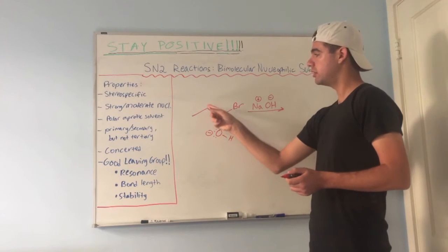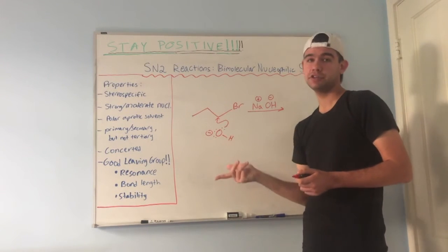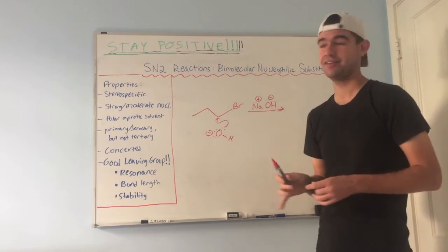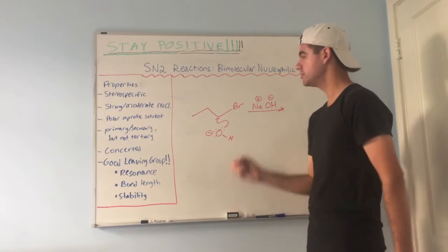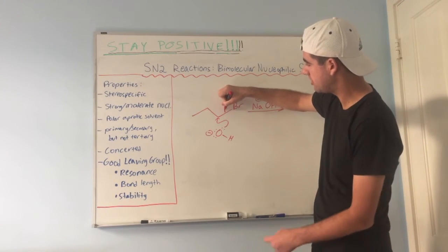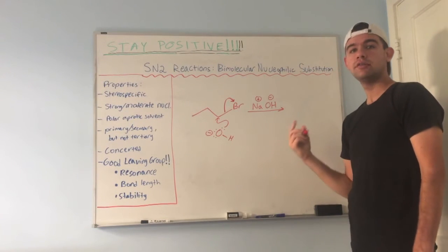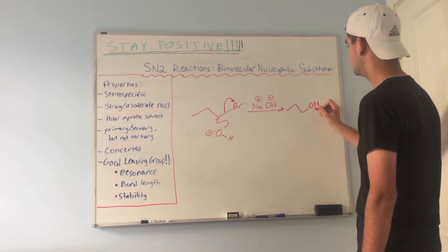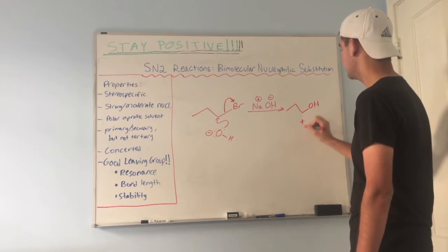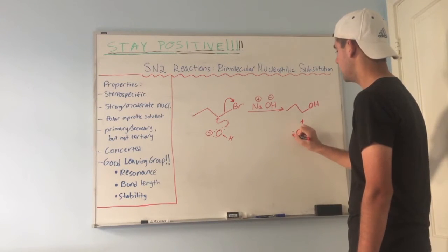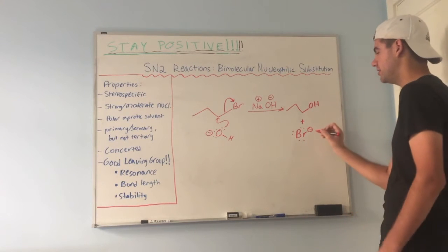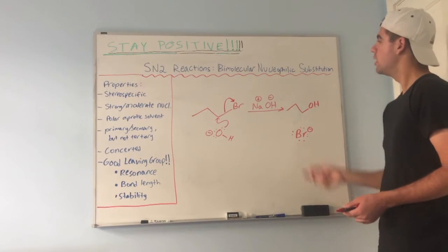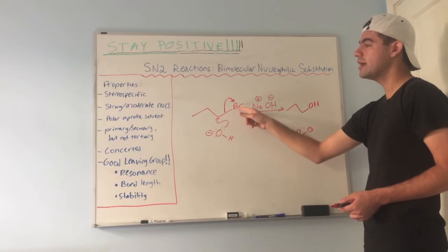You'll notice something strange: this carbon now has five bonds — bonded to the adjacent carbon, bromine, OH, and two hydrogens. Carbon cannot have five bonds; that's a pentavalent carbon and that never exists. So something has to leave — that's where the leaving group comes in. Bromine will leave; the electrons in the sigma bond go to the bromine and form bromide. Our products are the OH now attached to the electrophilic carbon, plus bromide ion. That's why it's called nucleophilic substitution — our nucleophile replaced the bromine.